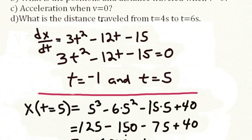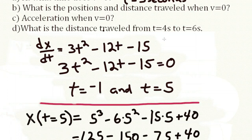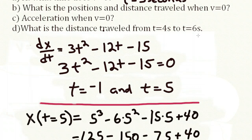The fourth part asks for the distance traveled from t equals four seconds to t equals six seconds. This gets a little tricky because the particle changed direction at t equals five seconds, when the velocity equals zero. The particle went one direction and then backtracked, so the total distance traveled is larger than the simple change in position from t equals four to t equals six.